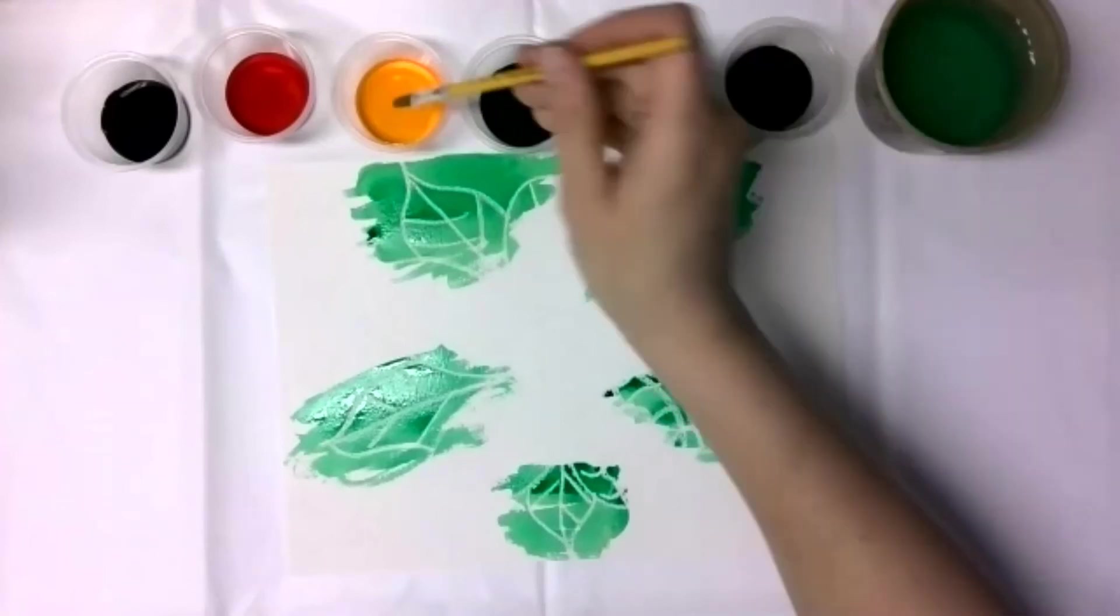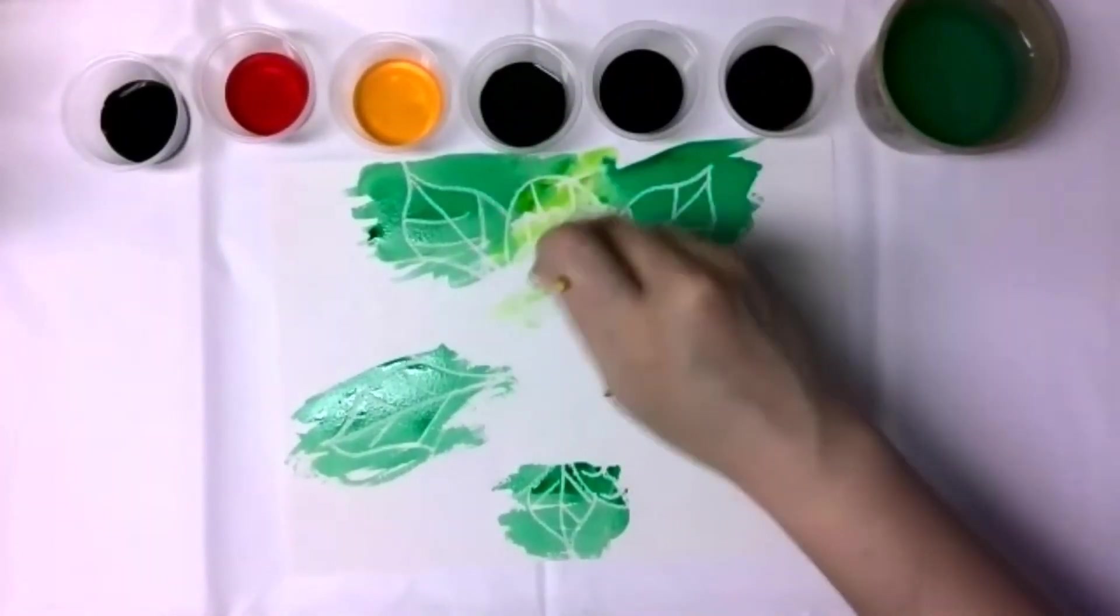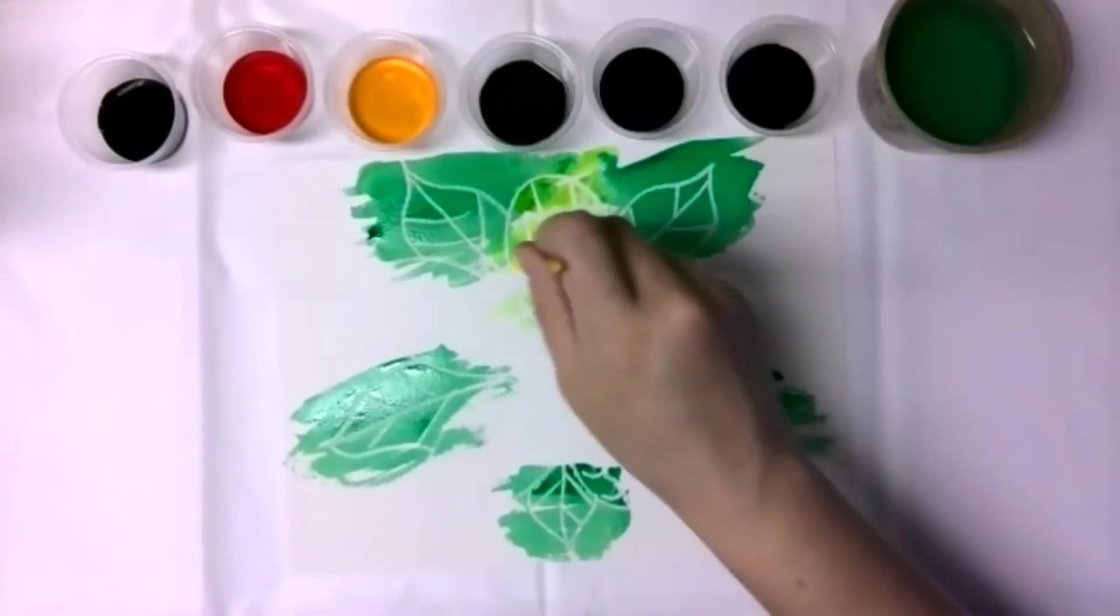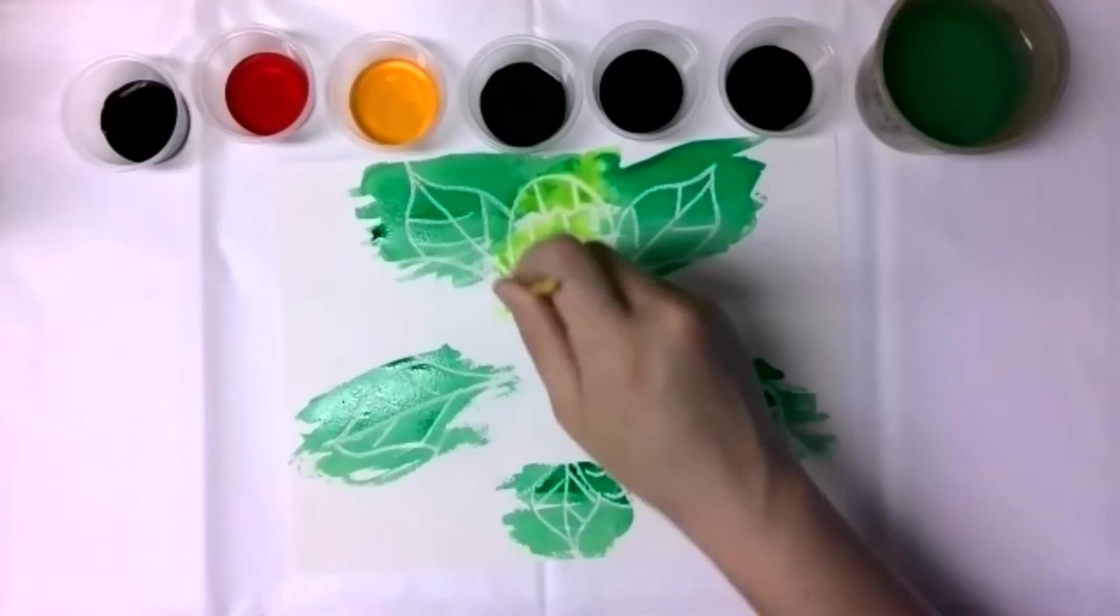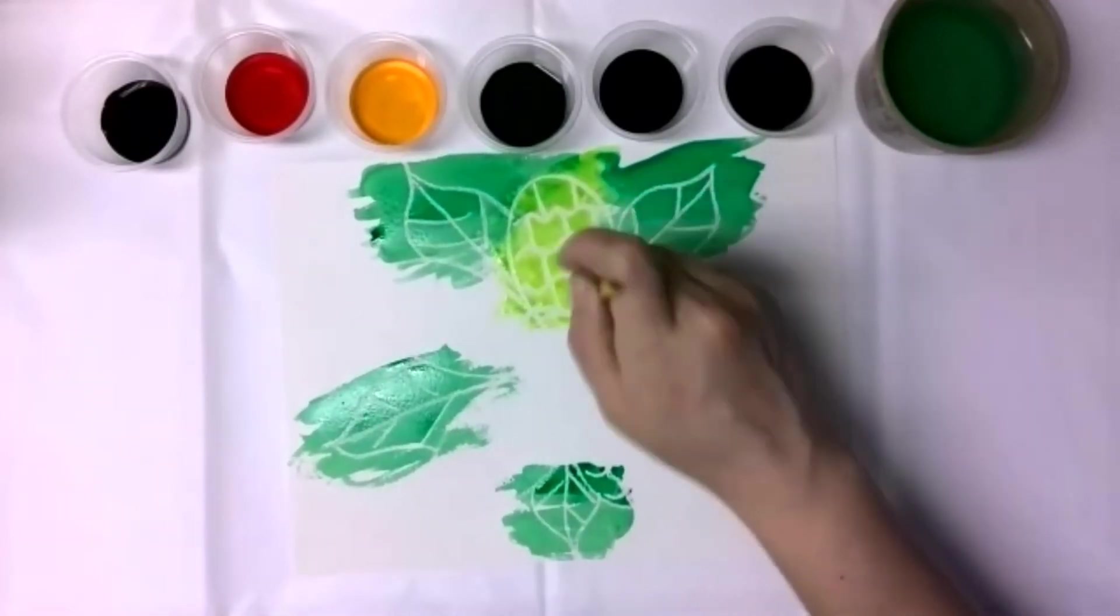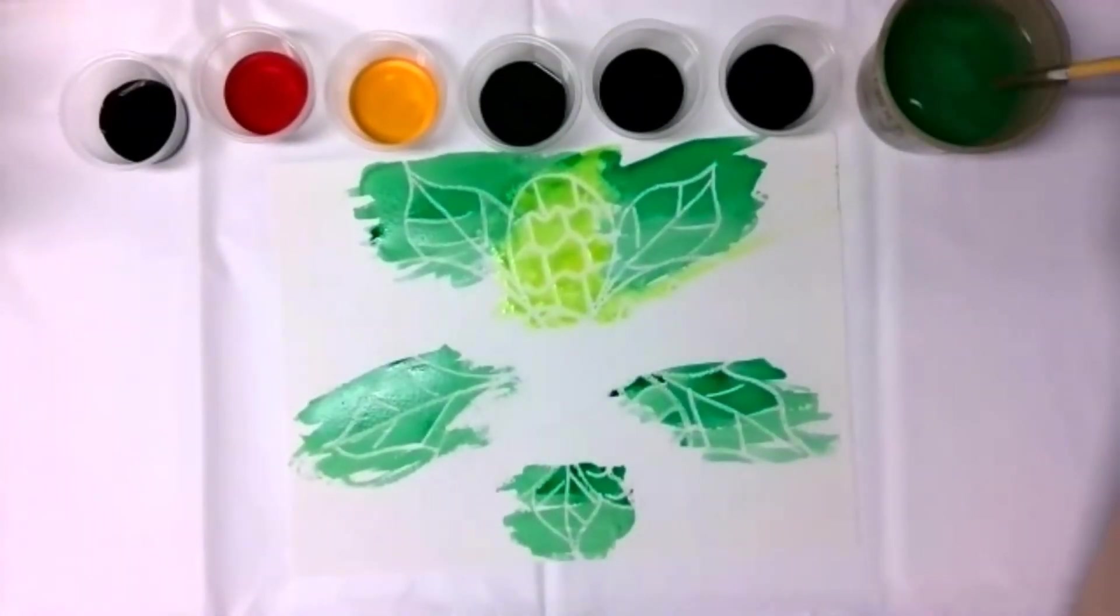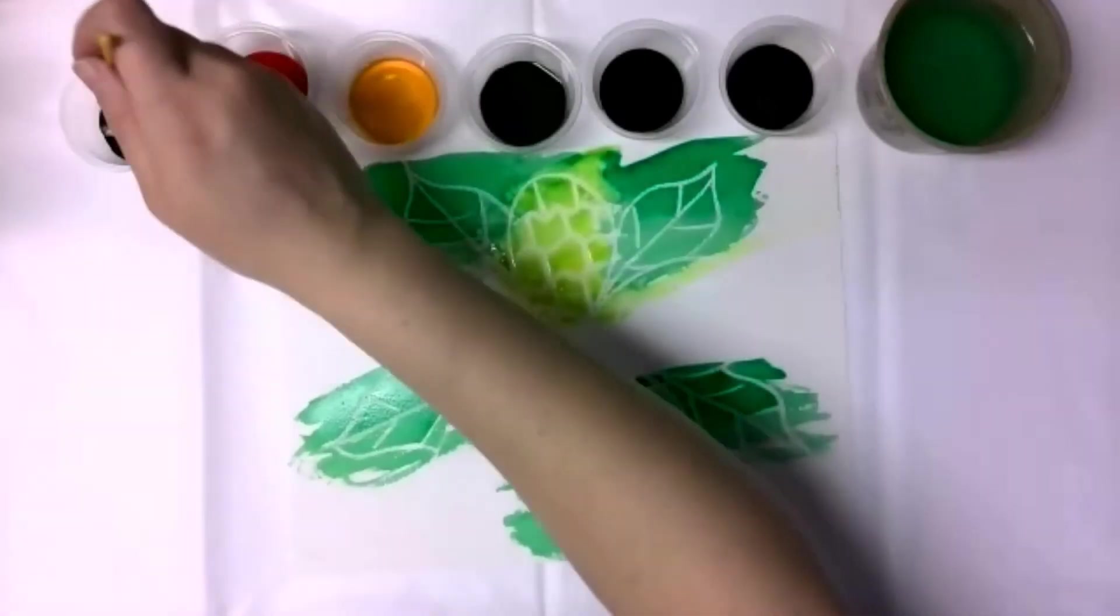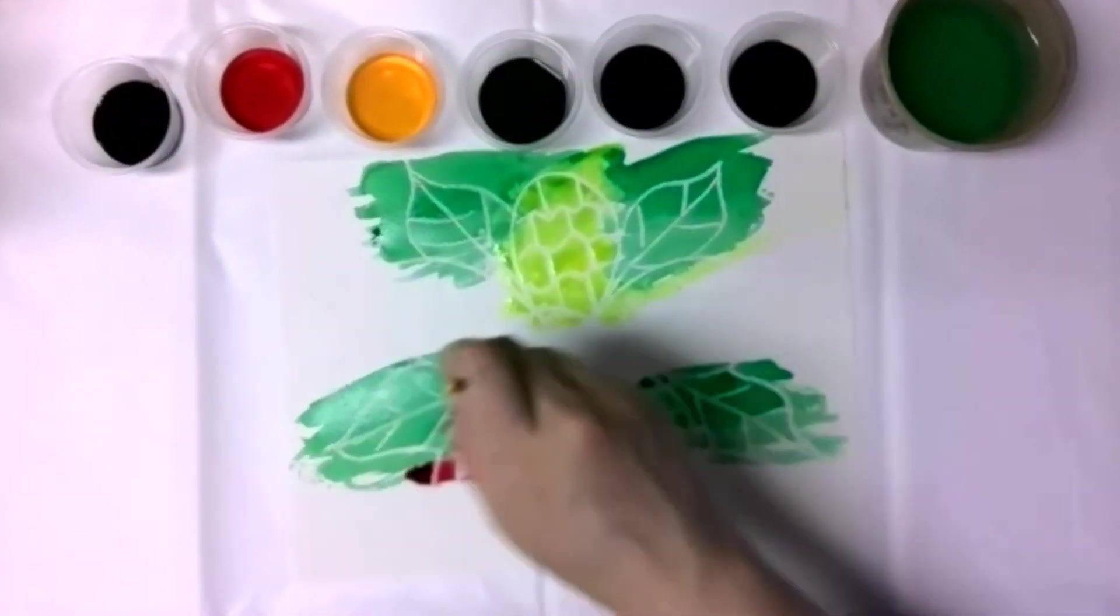All right. So now this petal up here, we're going to go in with some yellow. And of course, because it's right next to the green, it will probably mix with it and make that a color. So then let's go with a nice red for this petal over here.